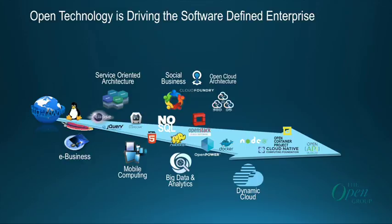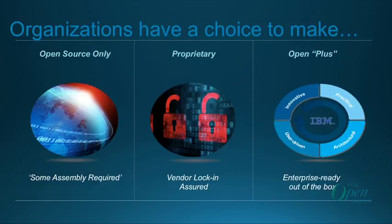There's an 'open plus' model: you can be your own open source vendor and assemble open source, which can be challenging because you're not focusing on your core competency; or you can go proprietary, with its own upside and downside including vendor lock-in; or you can take the open plus route — using open source and standardization to create interoperability between different implementations, where different vendors and organizations can extend the foundational code base, and sometimes those extensions become part of the standard.